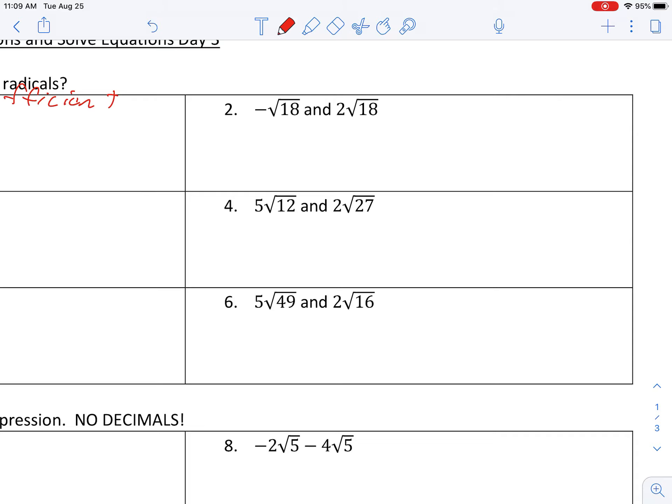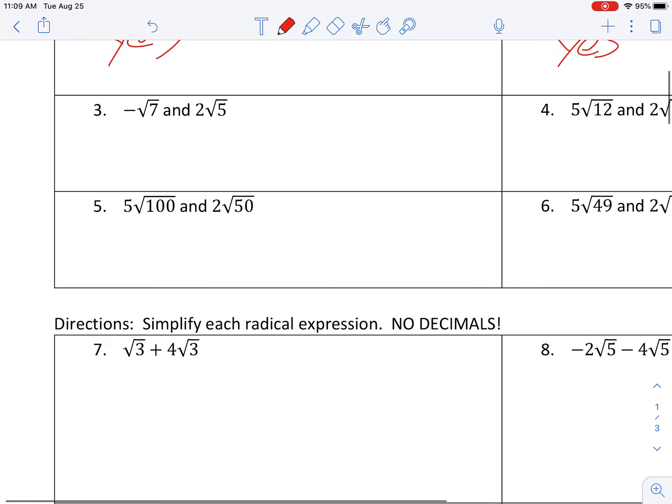Example two, do you think these are like radicals? Yes or no? Yes. Square root of 18, square root of 18, the coefficients of negative one and two, they are different. Who cares? But both of them are root 18. Example three, root seven and root five. These are a no. Okay. Root seven and root five are definitely not the same. So these are not like radicals.